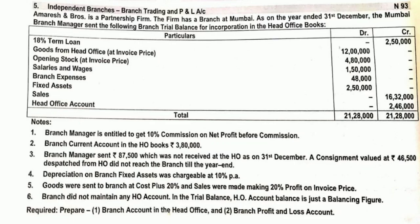The branch account in the head office books shows Rs. 3,80,000 — that is the opening balance of the branch account in head office books, meaning that amount is due by the branch to the head office. The branch manager sent Rs. 87,500 which was not received at the head office as on 31st December. Since it was sent but not received, in the head office books we use 'cash in transit account' — Cash in Transit Account debit, to Branch Account.